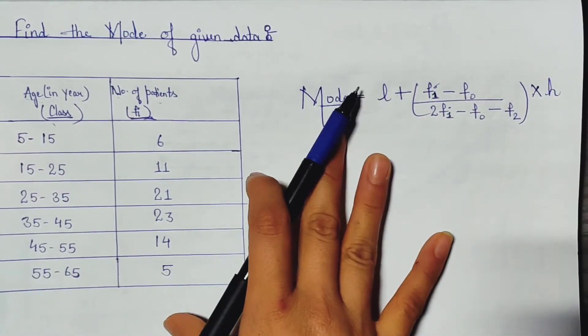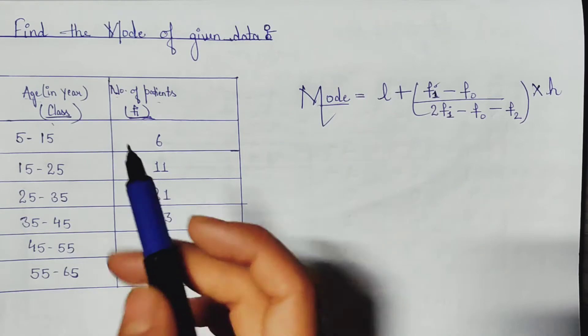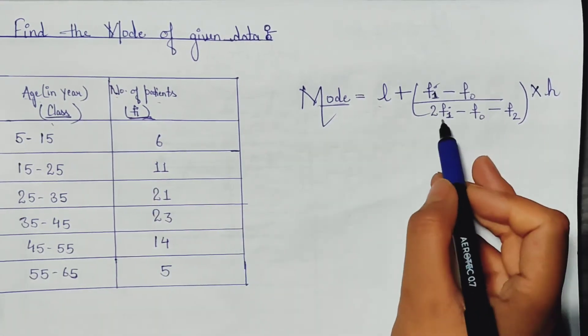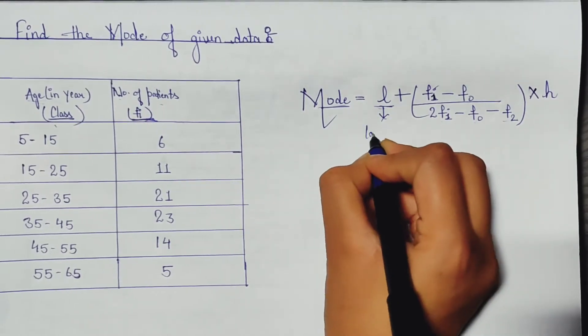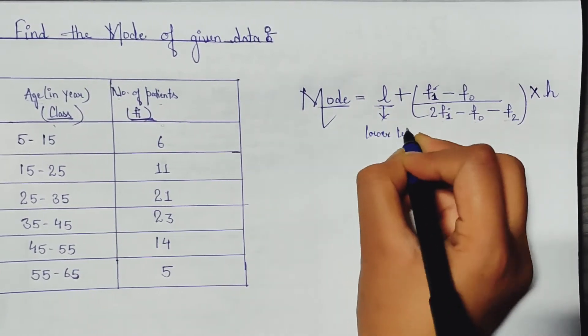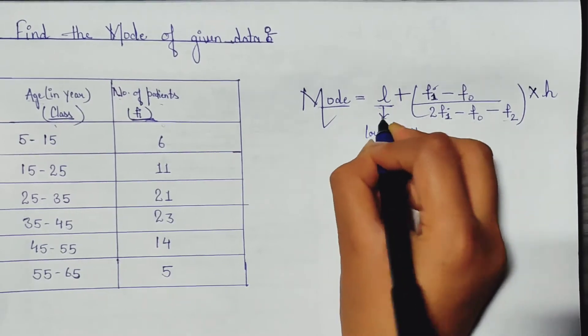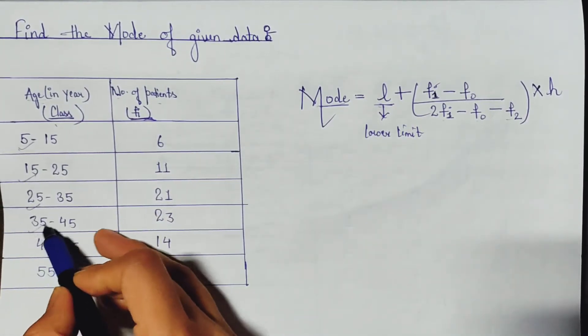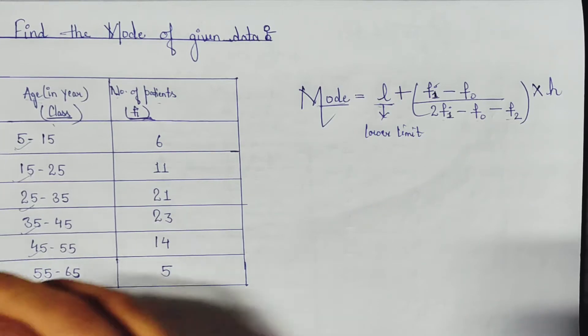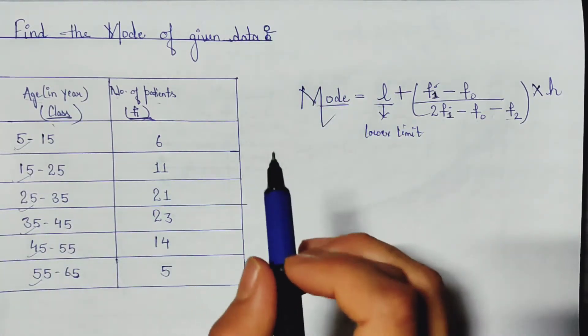Let's understand what all these terms mean. L is nothing but lower limit. But here lots of lower limits are 5, 15, 25, 35, 45, 55, so which one we need to find?